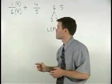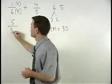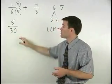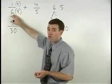So our first fraction becomes five over thirty. Notice that five over thirty has the same value as one over six.